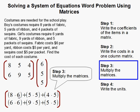So this is 8 times 6 plus 5 times 5 plus 4 times 5. And 6 times 6 plus 9 times 5 plus 5 times 5.